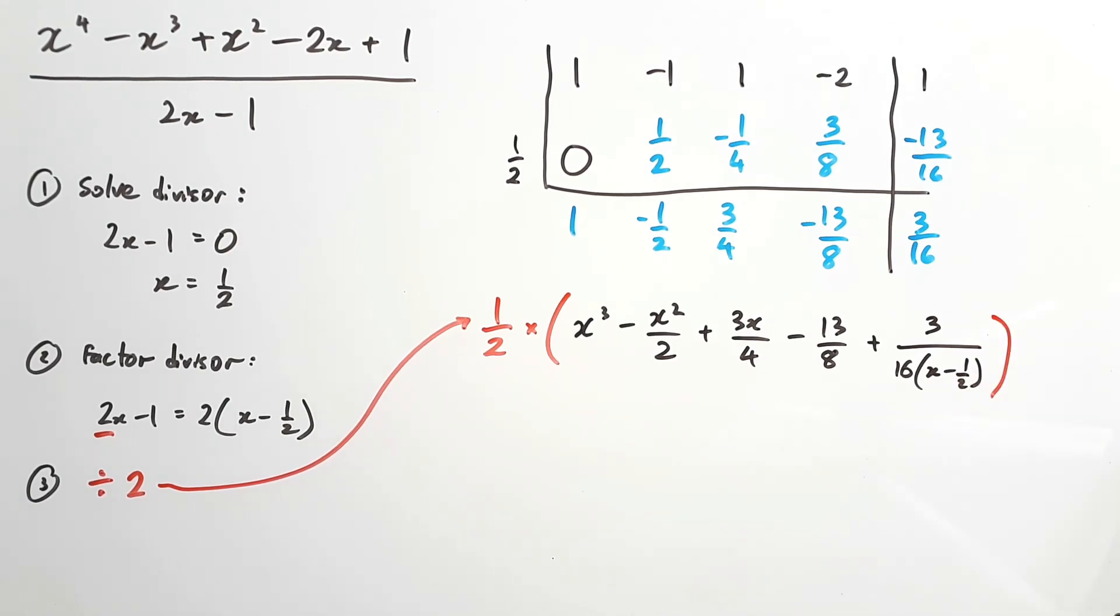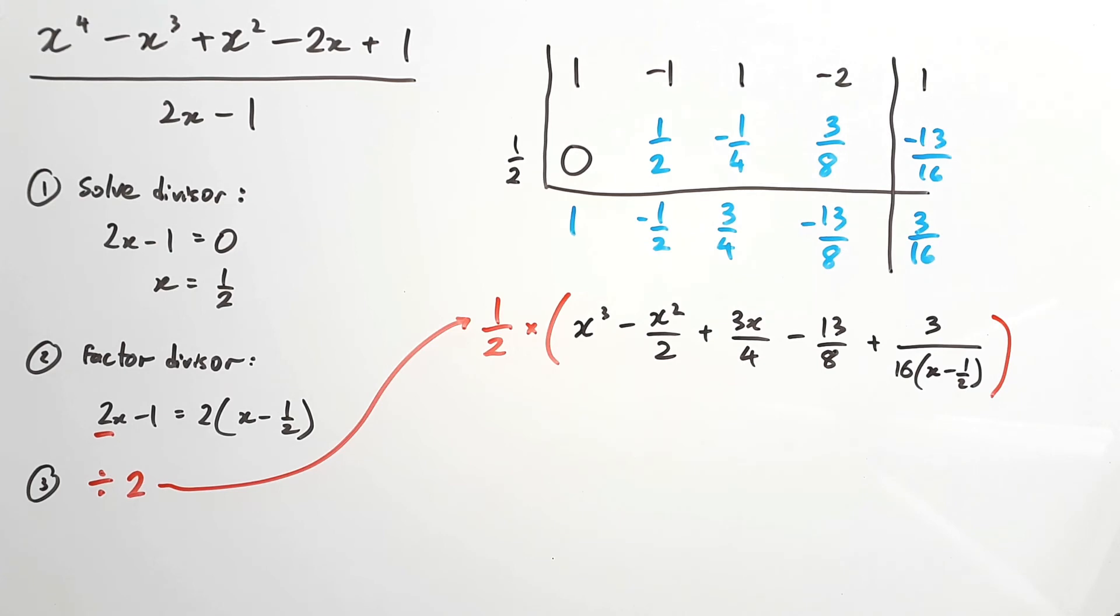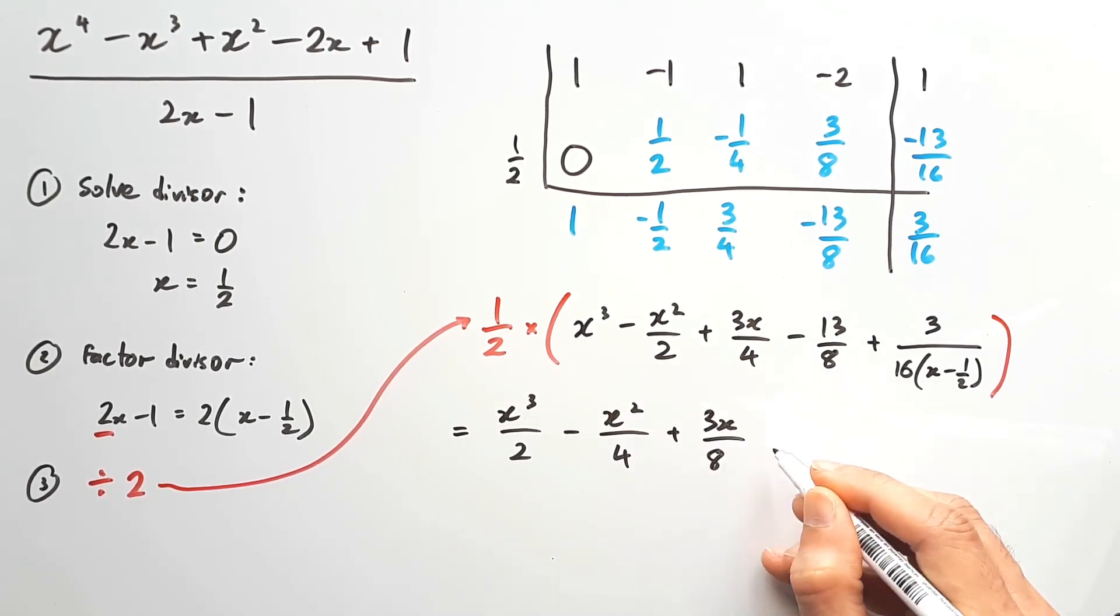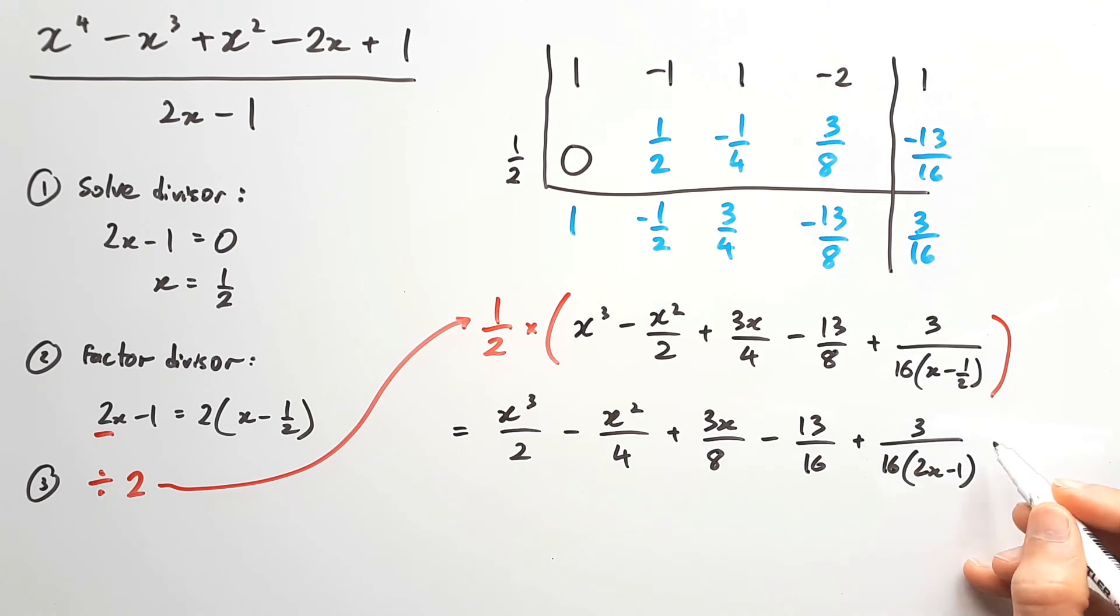So again, that information was generated from the numbers we found in our division. If you're not sure how I did that, then please have a look at my previous video, which explains how I turned the blue numbers into the black numbers. Okay, so if we just times everything by half, or divide by 2, then we have x cubed on 2 minus x squared on 4 plus 3x on 8 minus 13 on 16 plus 3 on 16 times your original divisor, 2x minus 1. And that is your answer.